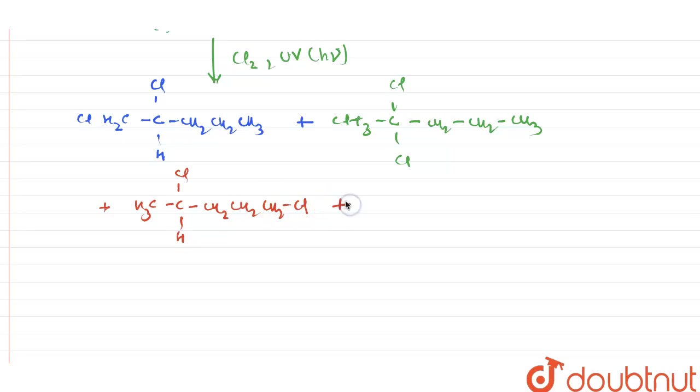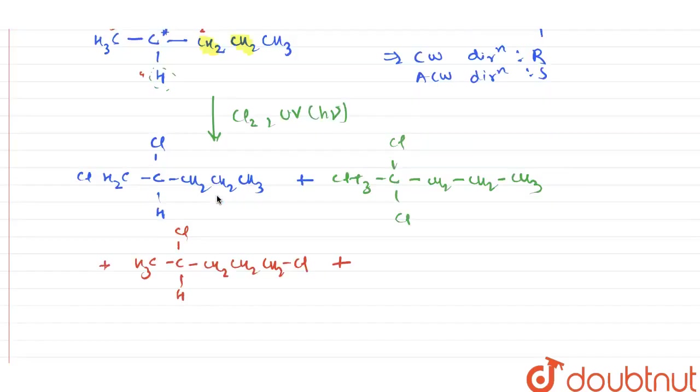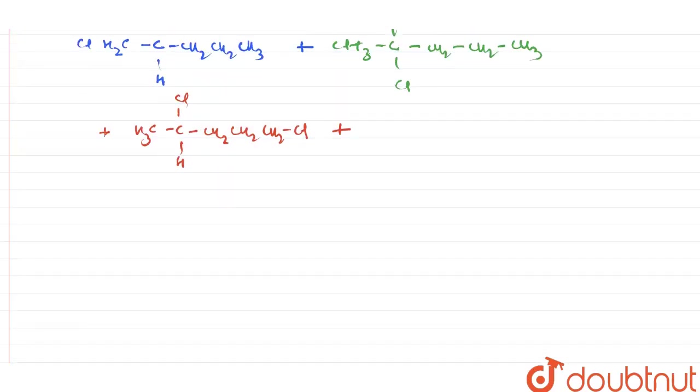What are the other products which are possible? So, chlorine can attack on this carbon atom or this carbon atom. But here, what happens is, when the chlorine is attacking on either of this carbon atom, we are going to get two chiral carbons.